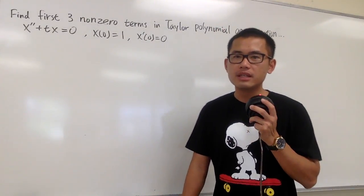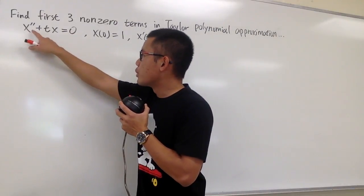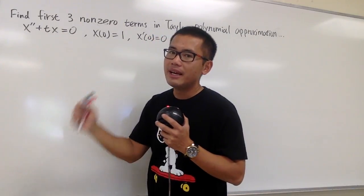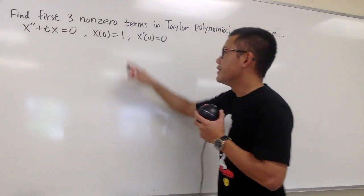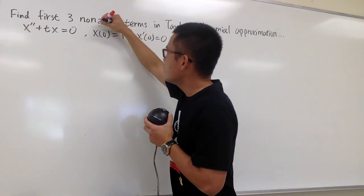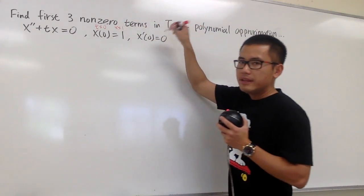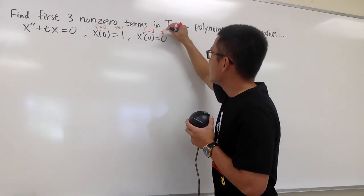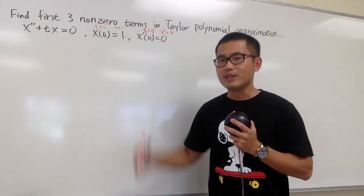We are going to find the first three non-zero terms in the Taylor polynomial approximation for this differential equation. We have x'' plus tx is equal to 0, which indicates that x is a function of t. The initial conditions are x(0) = 1, meaning when t equals 0, x is 1; and x'(0) = 0, meaning when t equals 0, x' is 0. We are looking for the first three non-zero terms.